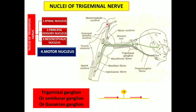The third is the mesencephalic nucleus, located in the central gray matter of the midbrain, extending upward. It receives proprioceptive sensations from the muscles of mastication, the muscles of facial expression, and the temporomandibular joint. The fourth is the motor nucleus, located in the upper part of the pons. Fibers arising from this nucleus form the motor root of the trigeminal nerve, supplying muscles derived from the first branchial arch — mainly the muscles of mastication.